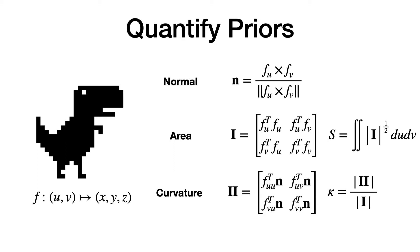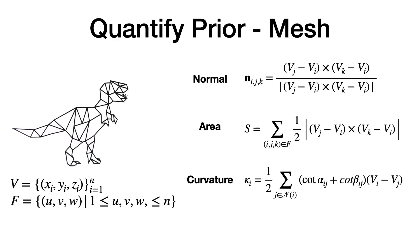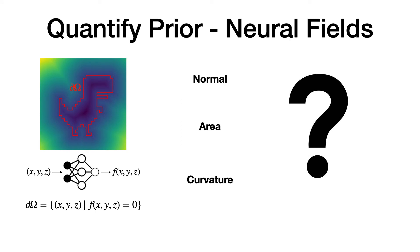However, we don't usually have access to surface parameterization. If the shape is represented as a mesh, then one can approximate these properties using discrete differential geometry. In our setting, shapes are represented using neural fields. More specifically, the surface is made of coordinates that the network will evaluate to zero. This requires a fundamentally different formulation to quantify the surface prior.